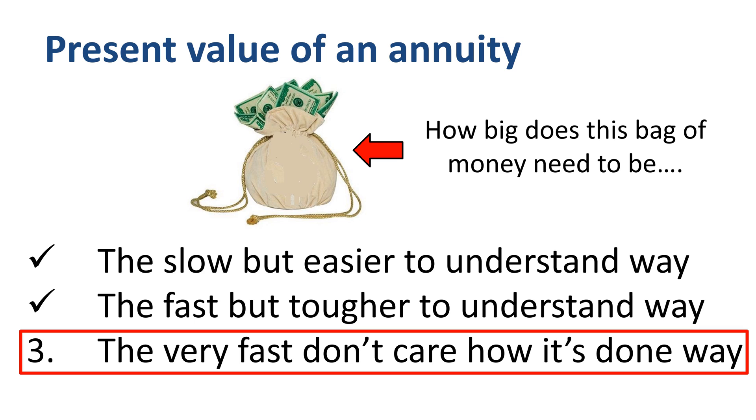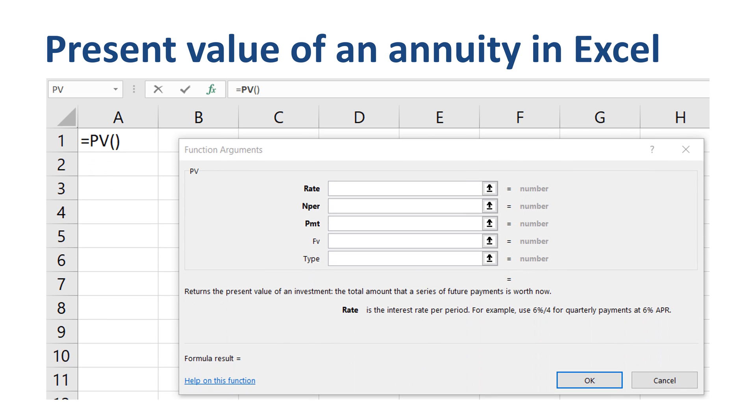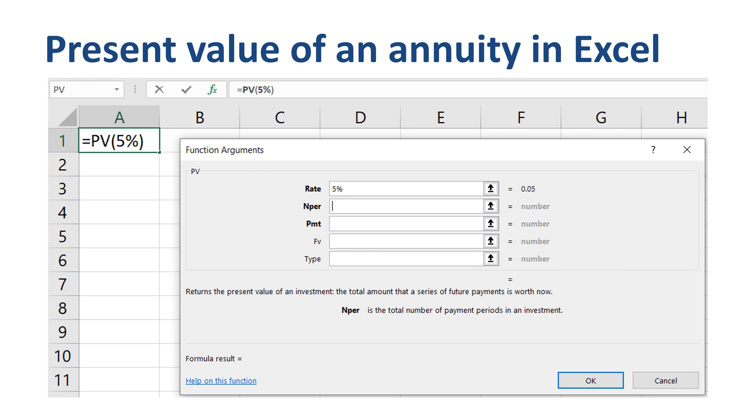And now for the very fast and I really don't care how it's done way. Calculating the present value of an annuity in Excel. Insert the PV function into your worksheet, and fill in the function arguments. Interest rate of 5%, or in decimal notation, 0.05.